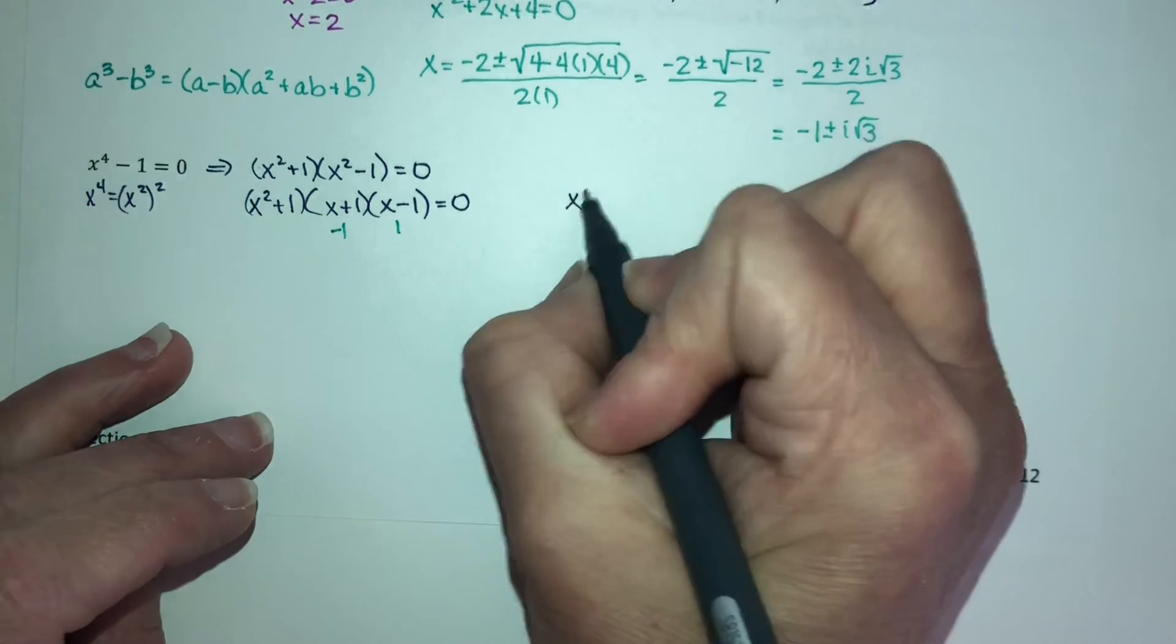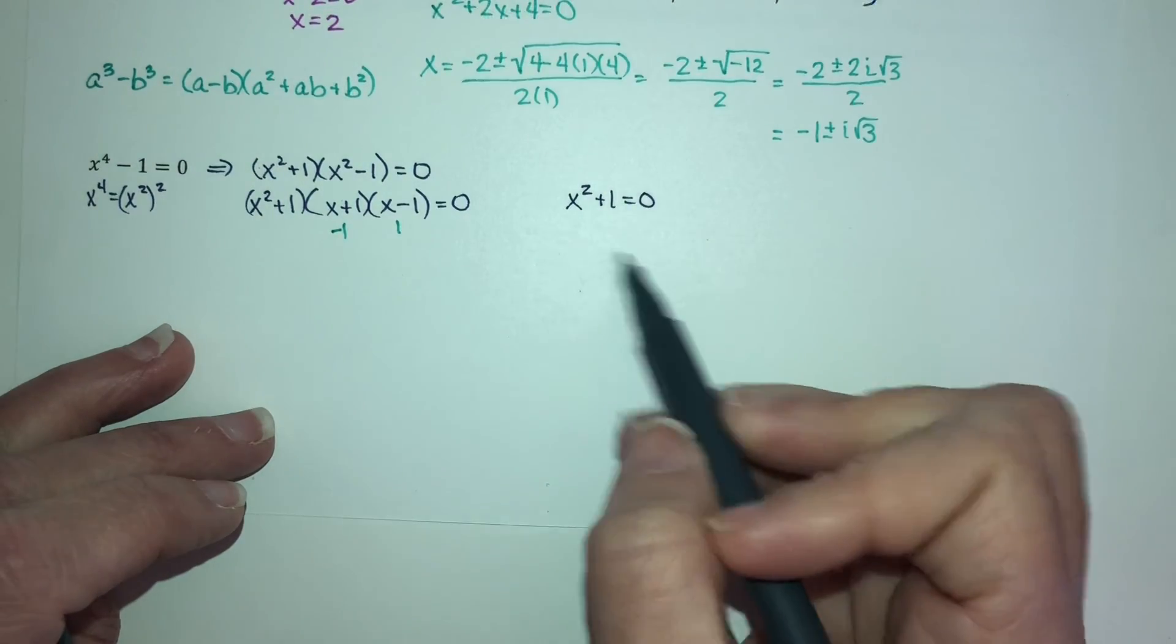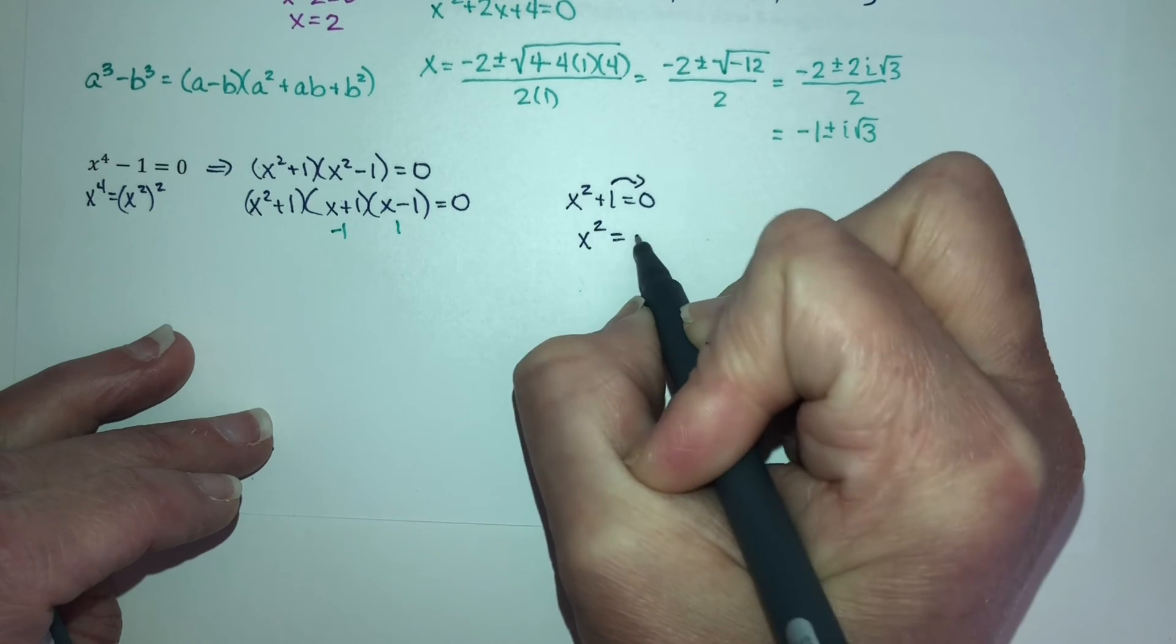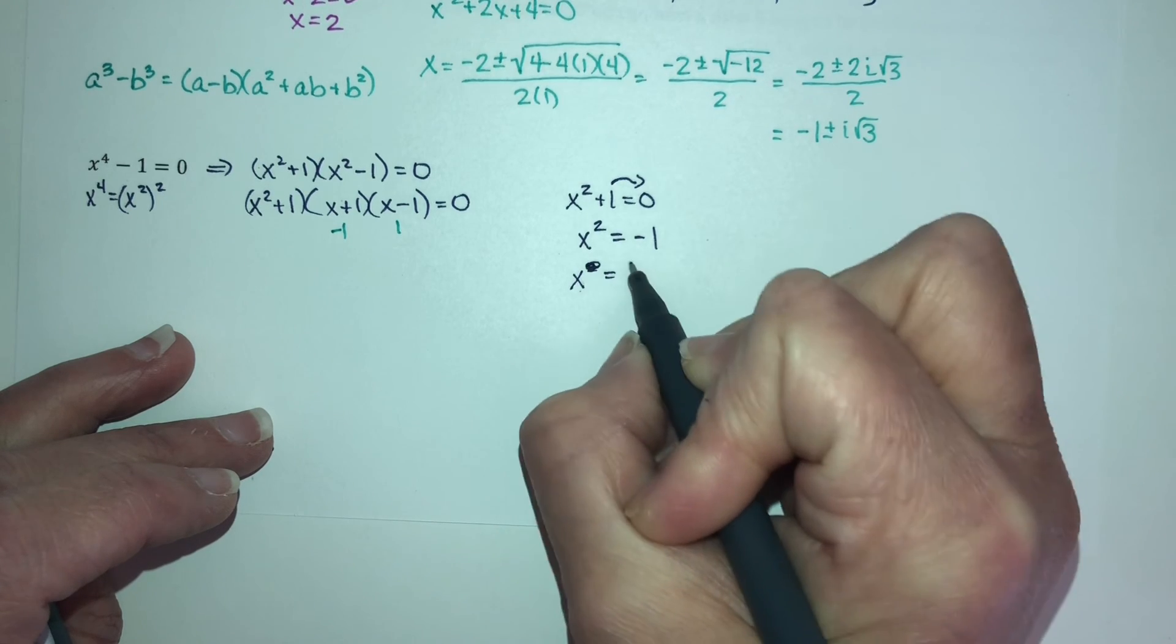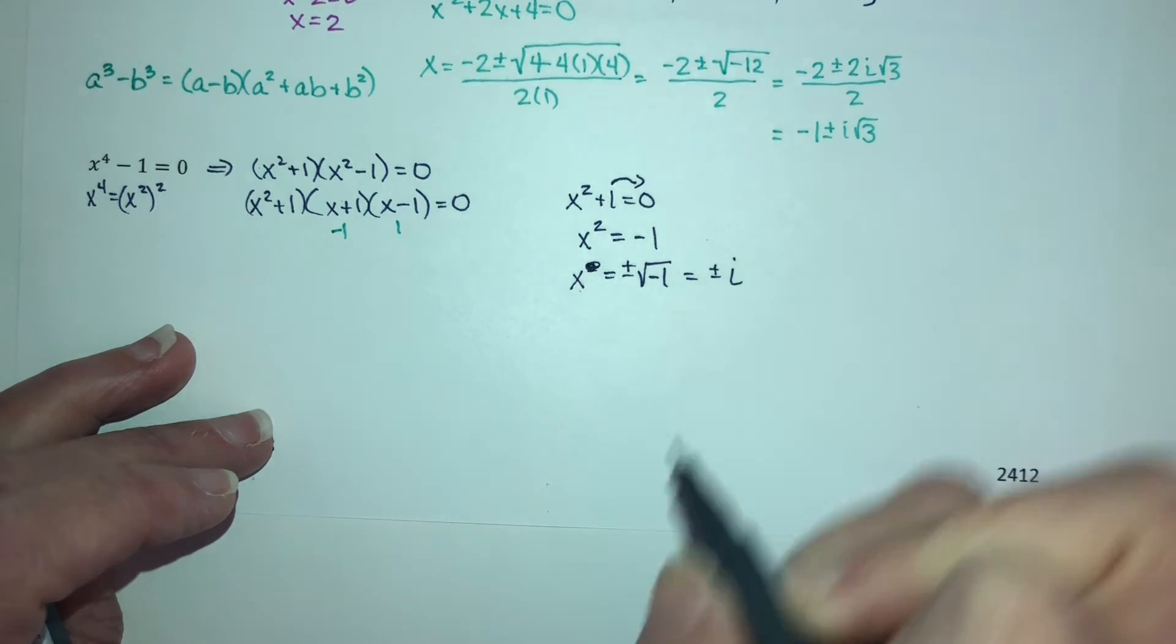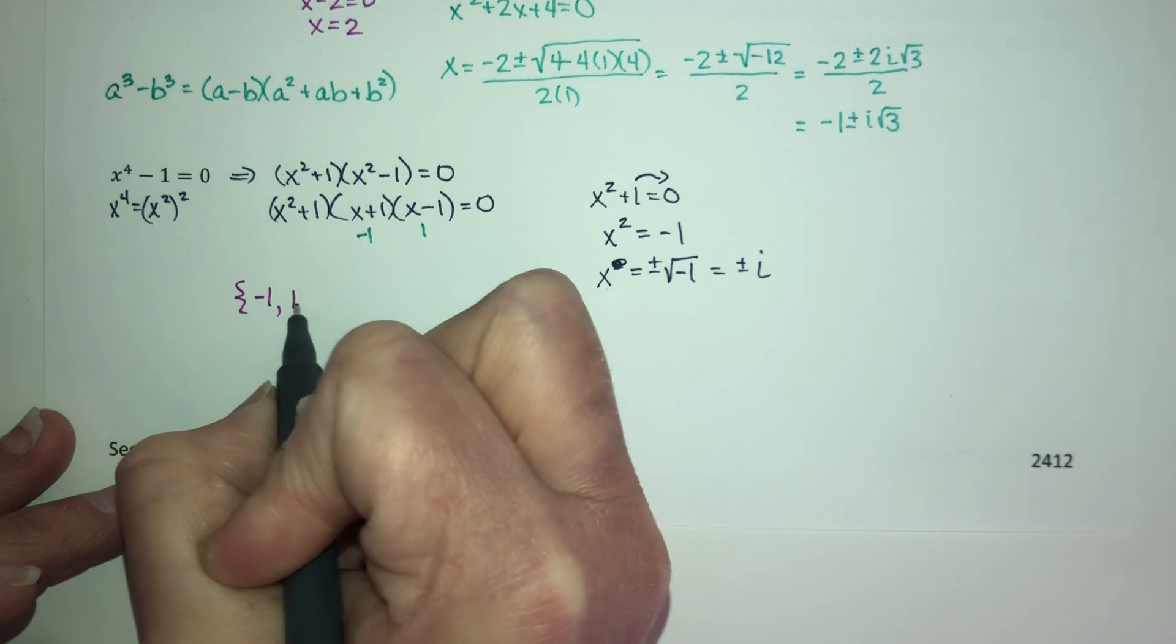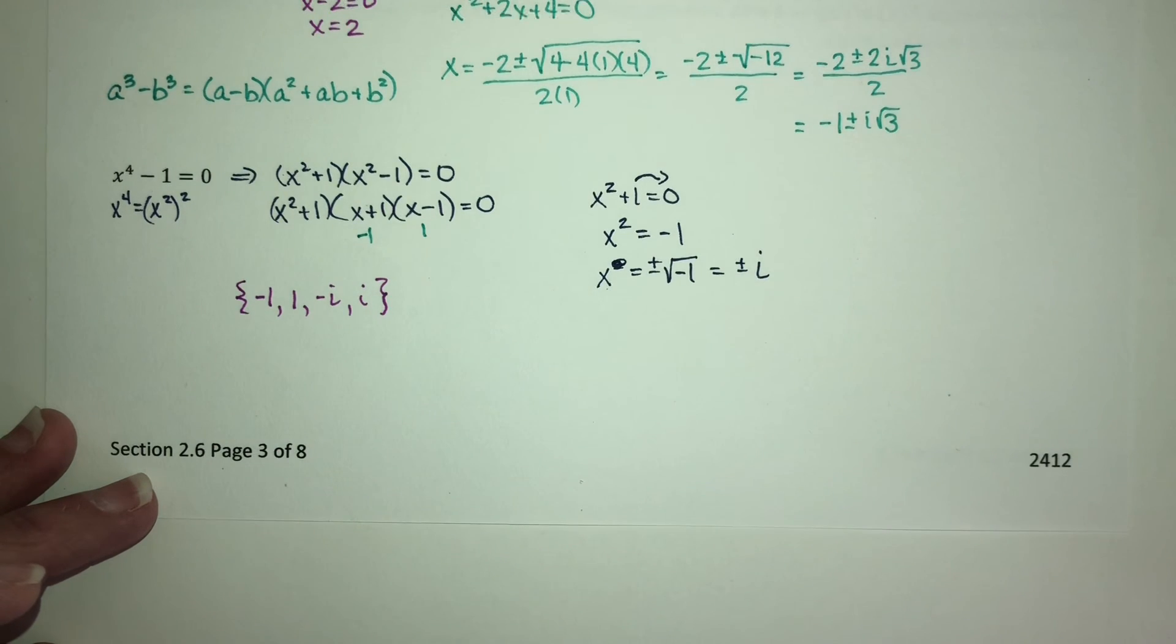Now let's come over and do x squared plus 1 equals 0. I can use the quadratic formula if I want to, but this is also set up pretty easily for the square root property. If I subtract 1 from each side, I get x squared equals negative 1. Then if you take the square root of both sides, you lose that square, and you get plus or minus the square root of negative 1, which is plus or minus i. So your solution set here is negative 1, 1, negative i, and positive i. Four solutions for a fourth degree equation.